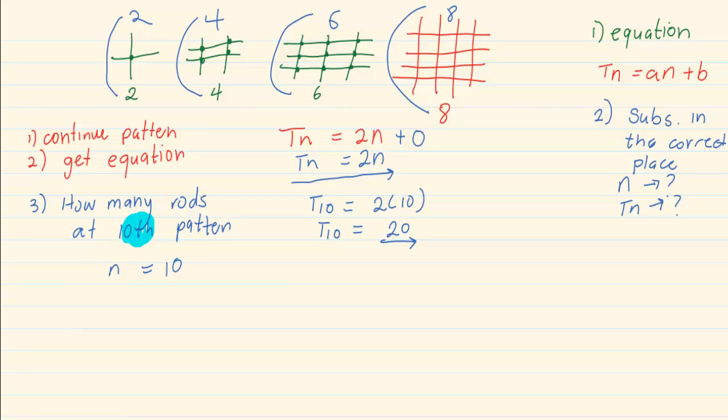Now look how I am going to change the question. What pattern will use a hundred rods? Or which pattern number would use a hundred rods? But what they are giving you is the hundred rods. That is now Tn. They are telling you that Tn equals 100.